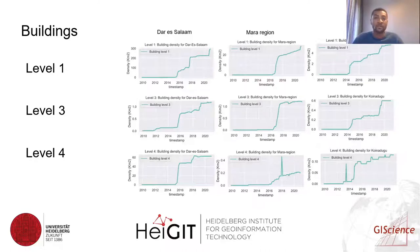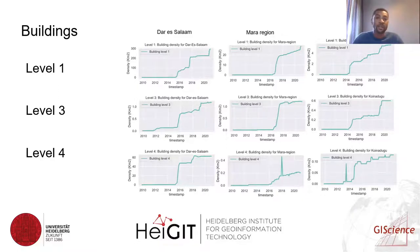We could also see that the timestamps when the mapping activities were done tend to be simultaneous in some instances. For example, in Dar es Salaam, level one and level three tend to be mapped simultaneously, whereas level four is different. It should be noted that maps were done in density and the y-axis differs.